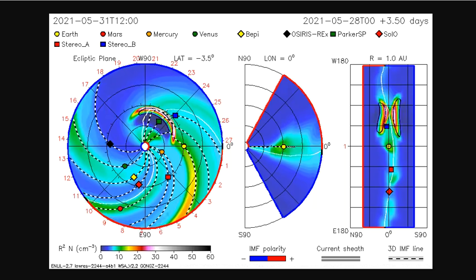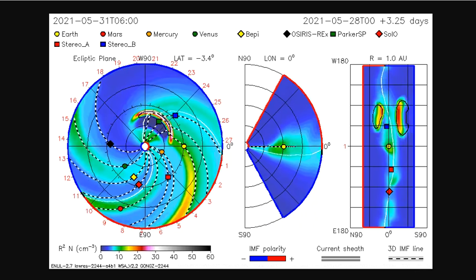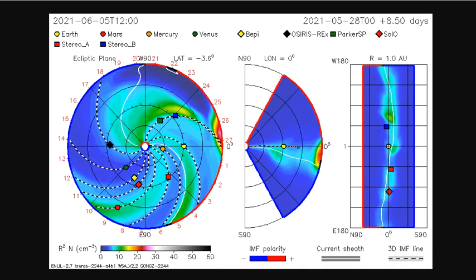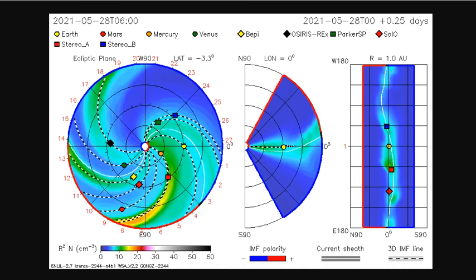Good evening, folks. It's Diamond with the Oppenheimer Ranch Project Magnetic Reversal News and Shinrin Yoku bringing you a solar eruption update Saturday, May 29th, right before midnight 2021.